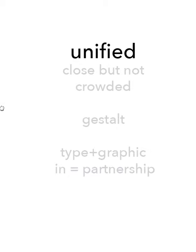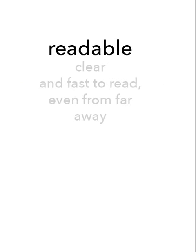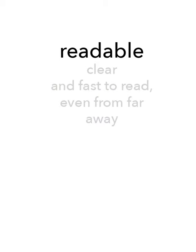Number four, your logo should be unified. Everything should work together to create that big message — the gestalt. The typography and the graphic are in perfect partnership. Things should be close together but not crowded. Closeness indicates relationship between things, so you want things close and unified but definitely not crowded and congested.